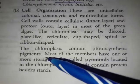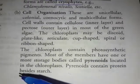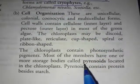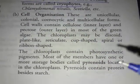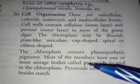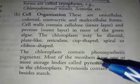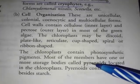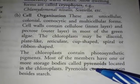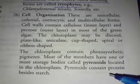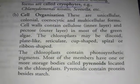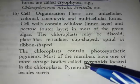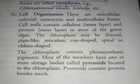The chloroplast contains photosynthetic pigments. Most of the members have one or more storage bodies called pyrenoids. The pyrenoid contains protein besides starch. These are the storage bodies located in the chloroplast and contain protein around which starch is deposited.